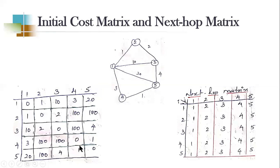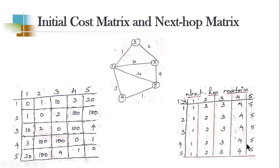Now we will see the initial cost and next hop metrics. In Dijkstra's algorithm there was something called path metrics, which was initially assigned all zeros because we wrote the direct cost values in the cost matrix and since there was no via-path for a direct path, all via values in path metrics were zero. But here in distance vector routing we don't write path metrics — we write next hop metrics.